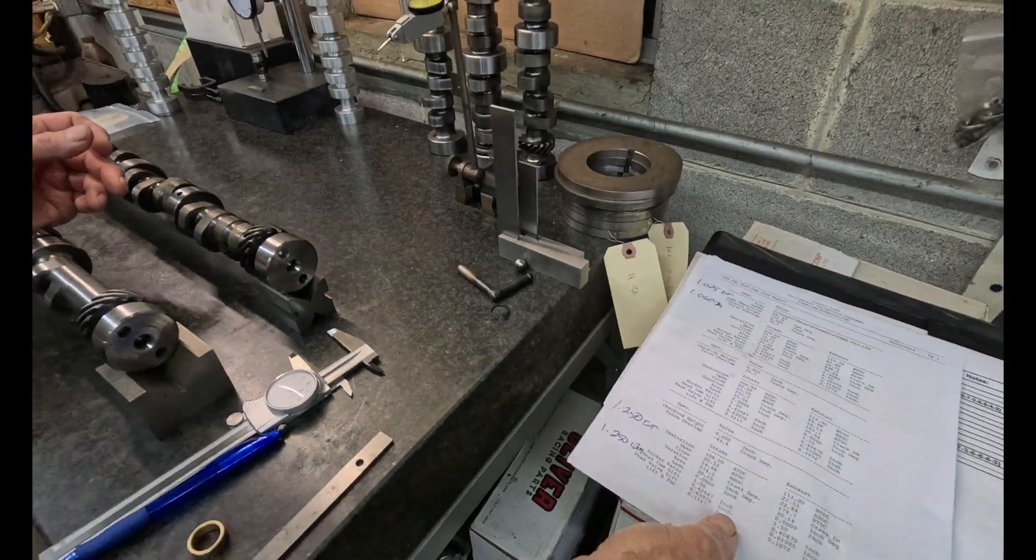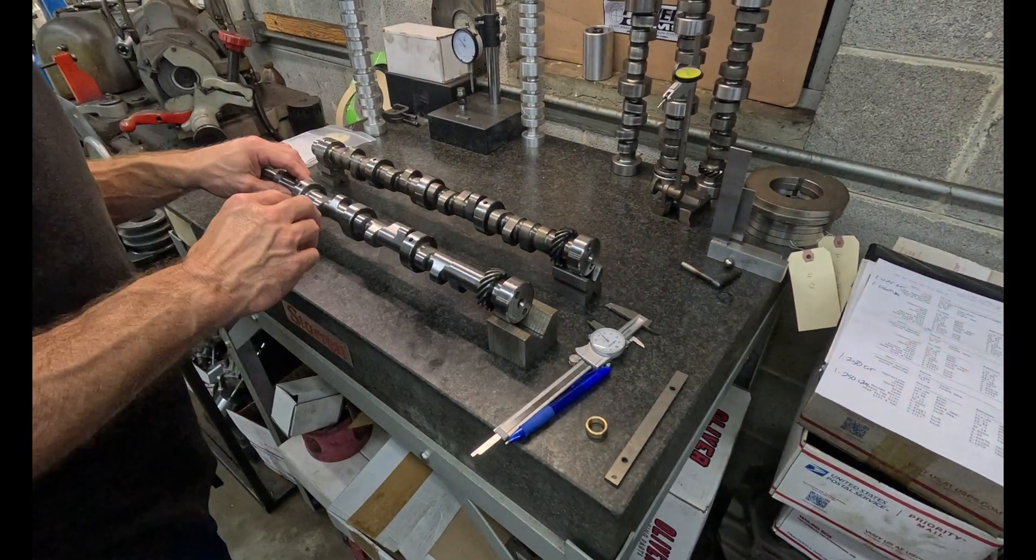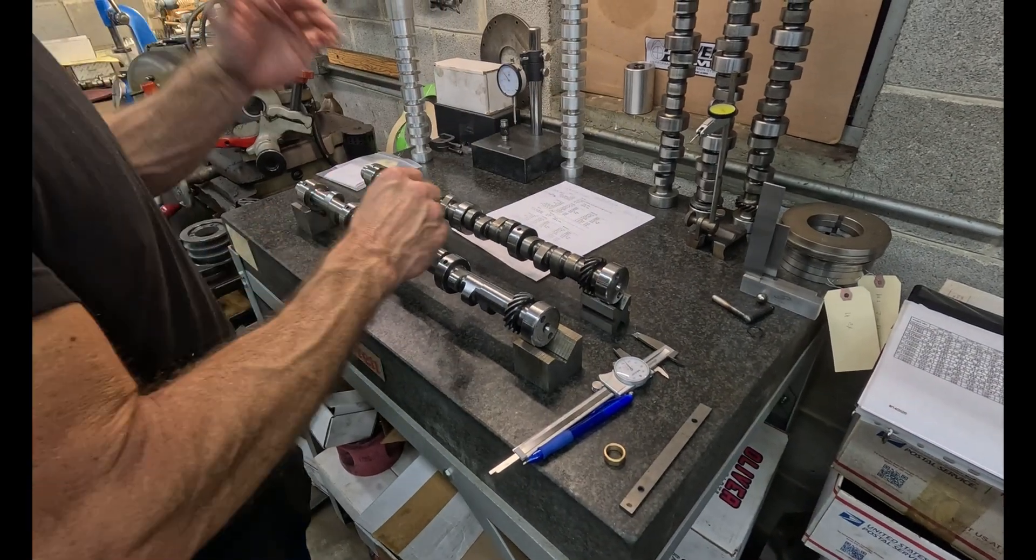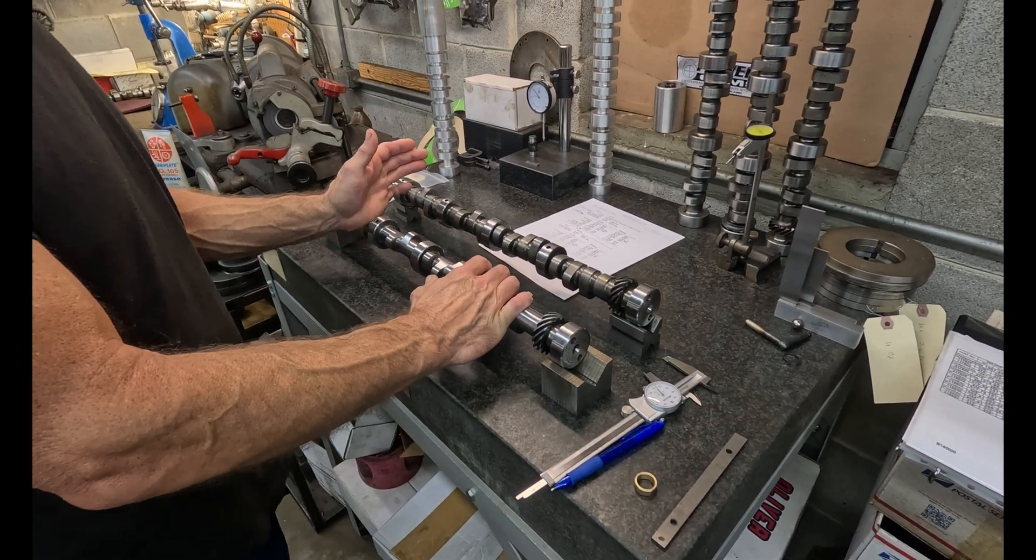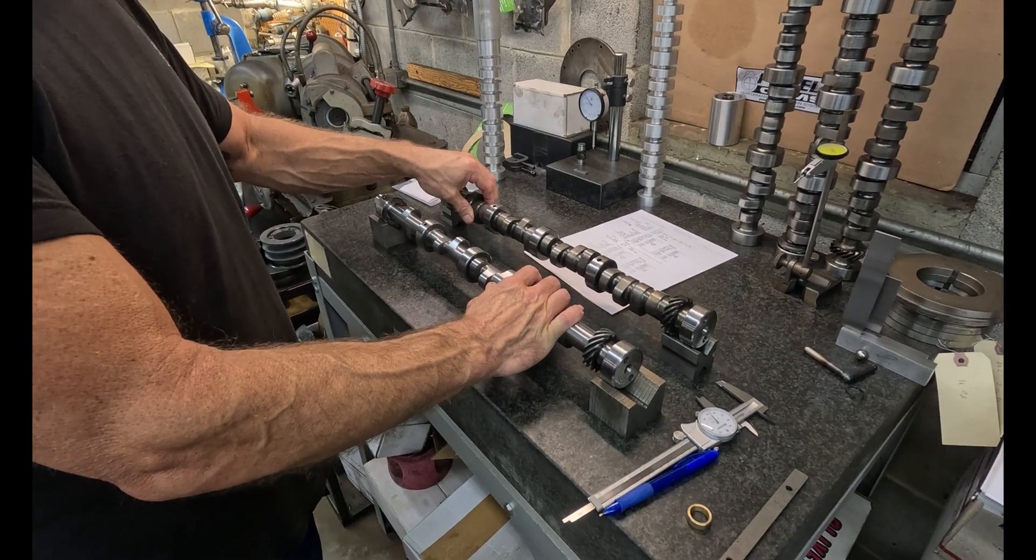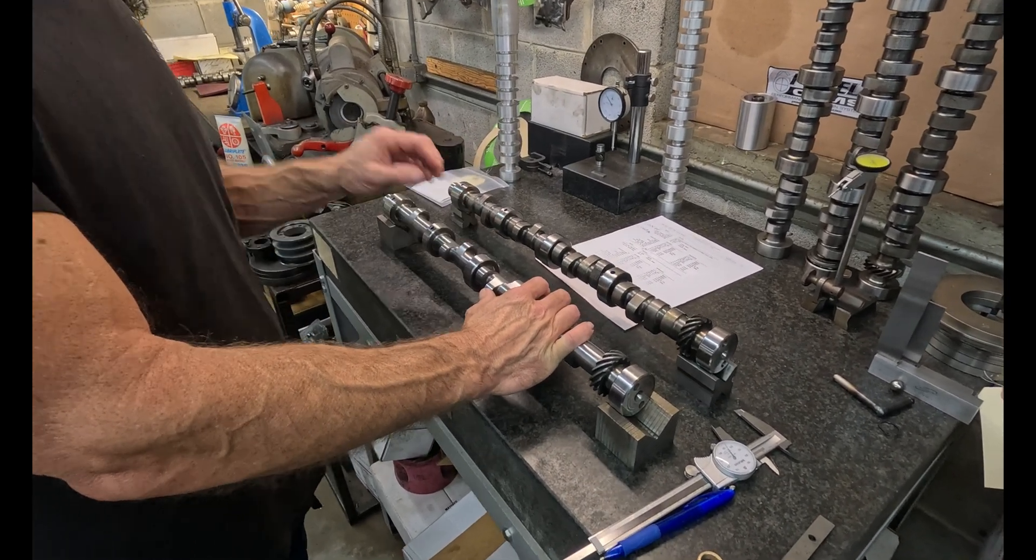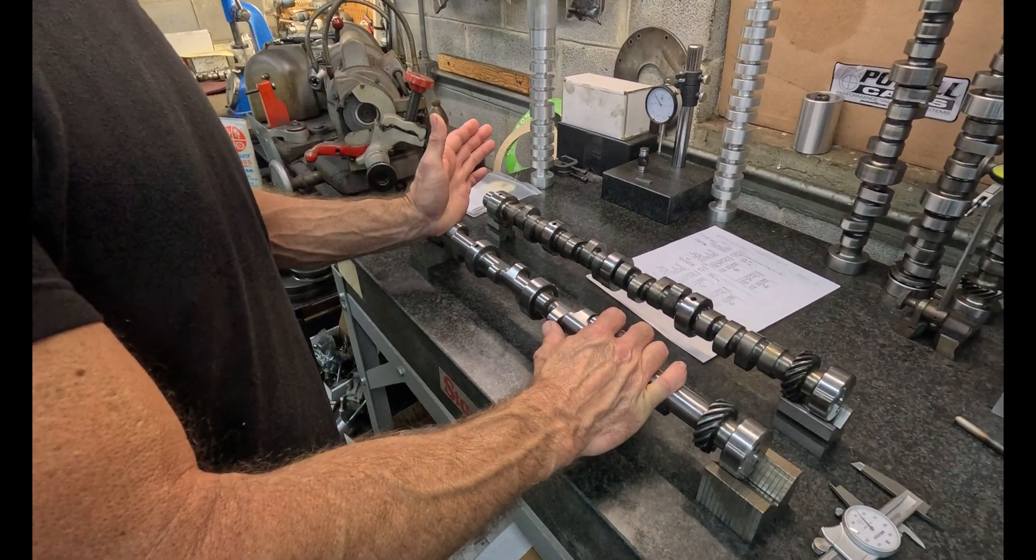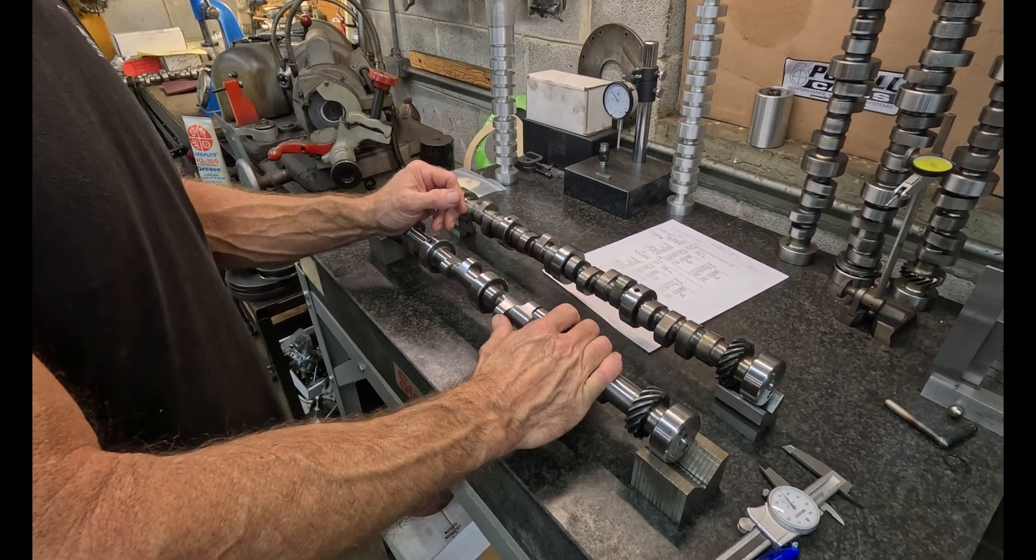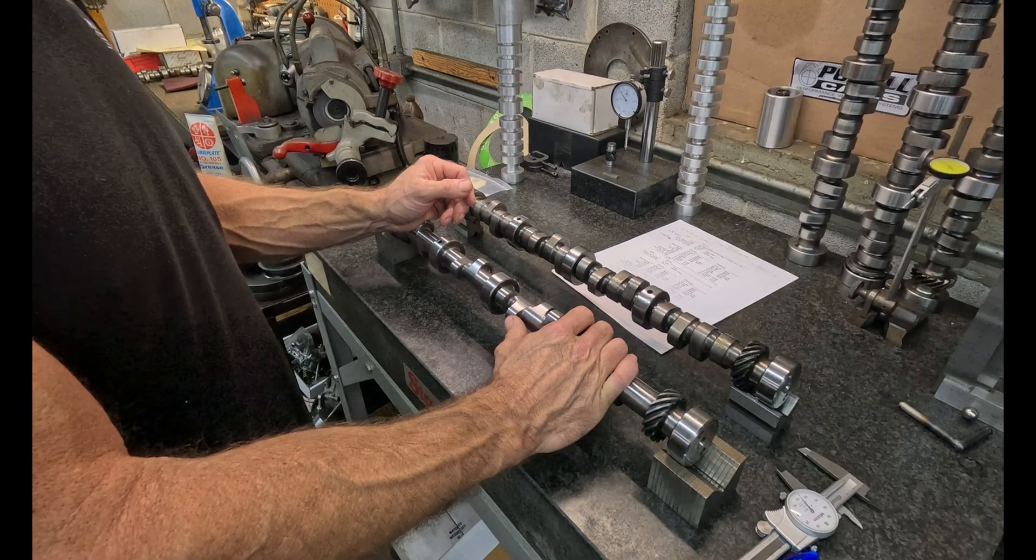So I've done a little measuring. The base circle on the intake, and I made me some notes here, the base circle on the intake is 1 inch and 25 thousandths. The base circle on the unground core is 1 inch, 250 thousandths. So that's a reduction of base circle, 225 thousandths, basically 7/32nds of an inch.